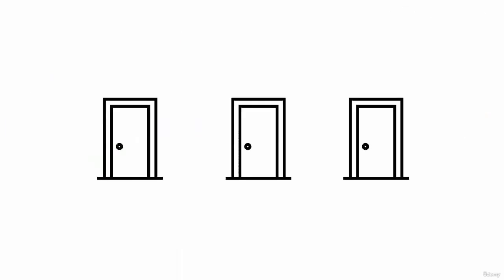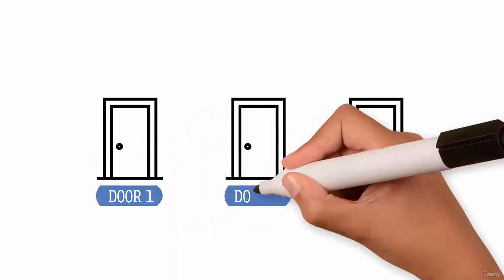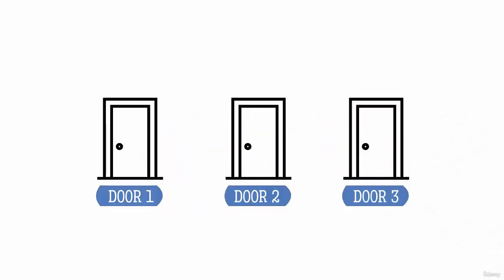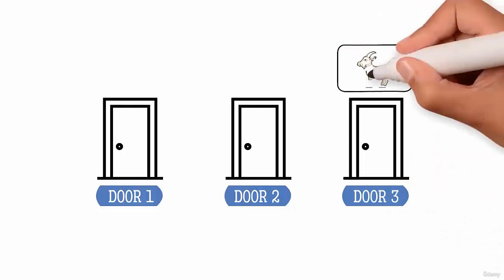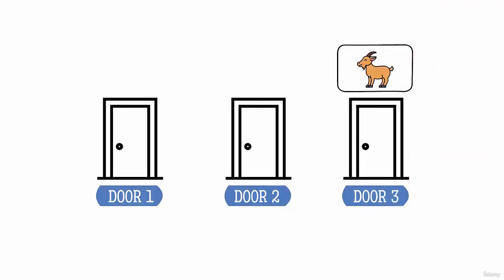Suppose you are on a game show and you're given the choice of three doors. Behind one door is a car, behind the others goats. You pick a door, say door number one.